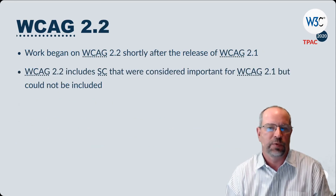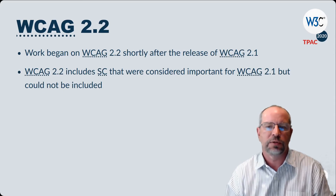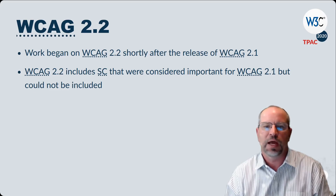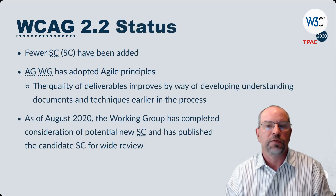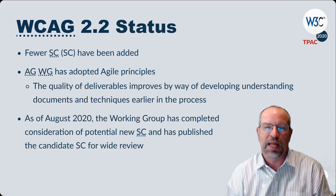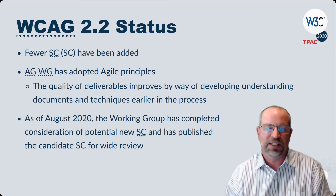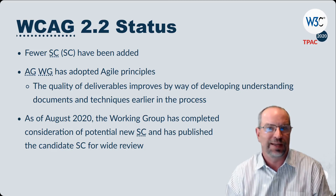Shortly after the release of WCAG 2.1, work began on WCAG 2.2, which includes success criteria that were considered important for WCAG 2.1 but could not be included in that version. Fewer success criteria have been added, as AGWG has adopted agile principles for developing new standards, and the quality of deliverables improves by developing understanding documents and techniques earlier in the development process.